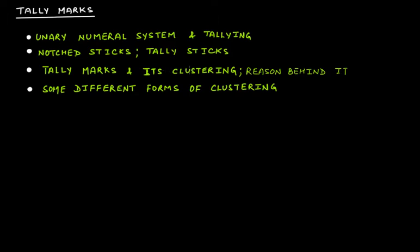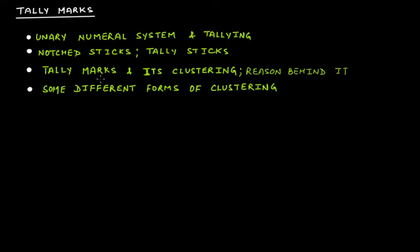So notched sticks and tally sticks are basically telling the count — the repetition of one particular thing. If it's a cow, a goat, or anything they were counting, they would put a notch, and each notch would be a count. The third point is tally marks and their clustering, and the reason behind it. Now you have a better understanding of what tallying is.